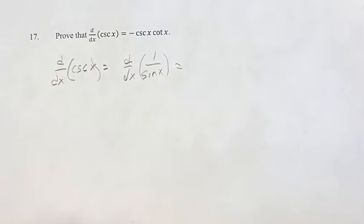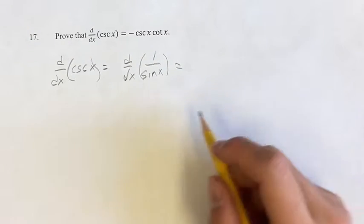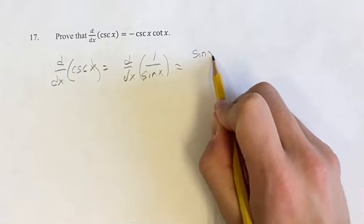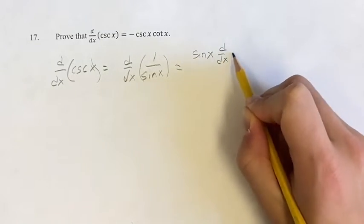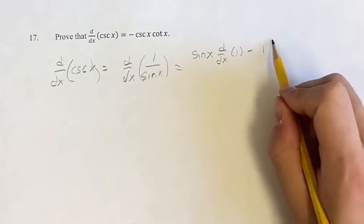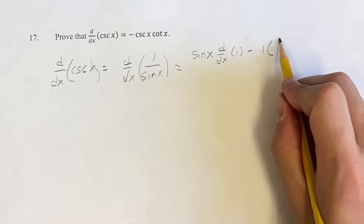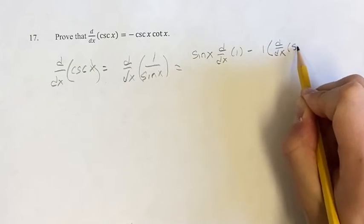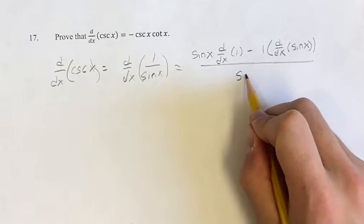And now we have a fraction where we can use the quotient rule to solve for this derivative. So we're going to take the denominator times the derivative of the numerator minus the numerator times the derivative of the denominator over the denominator squared.